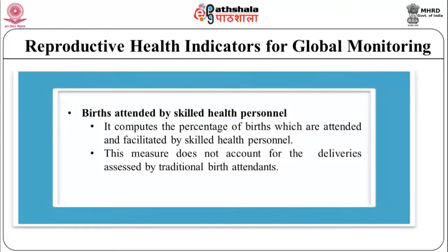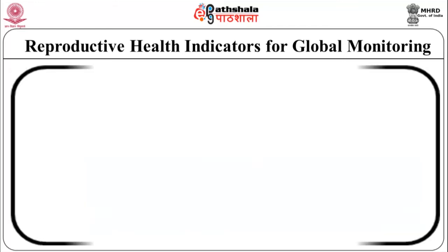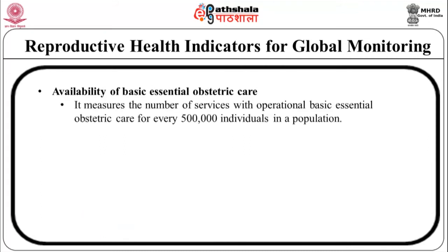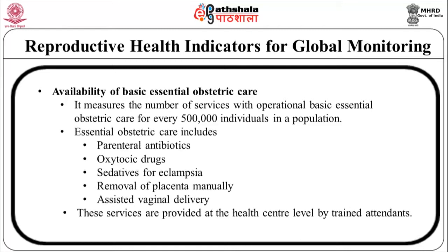Births attended by skilled health personnel computes the percentage of births which are attended and facilitated by skilled health personnel; this measure does not account for deliveries assisted by traditional birth attendants. Availability of basic essential obstetric care measures the number of services with operational basic essential obstetric care for every 500,000 individuals in a population. Essential obstetric care includes parental antibiotics, oxytocic drugs, sedatives for eclampsia, manual removal of placenta and assisted vaginal delivery, provided at the health center level by trained attendants.